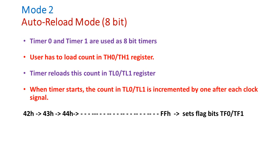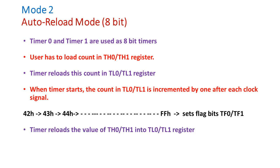After the first clock cycle the count will be 43H, the next cycle it becomes 44H, and this count goes on incrementing until it becomes FFH. After that, the controller sets the flag bit TF0 or TF1. For the next cycle, the timer automatically reloads the value stored in TH register into TL register and starts the operation again.